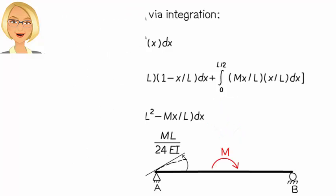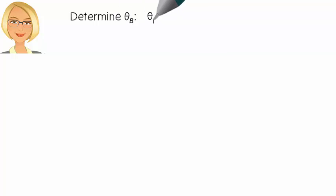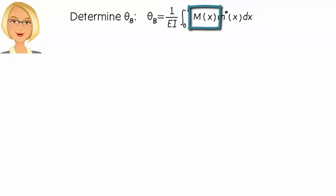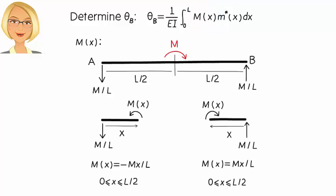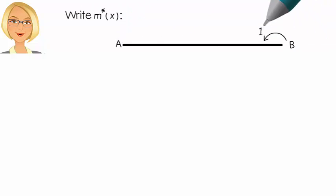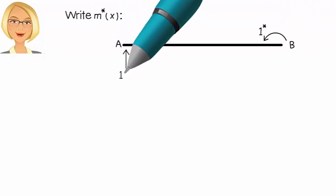Now let's calculate theta B the same way. M(x) is the same as before. To calculate M star (x), this time we place the virtual unit moment at B in the assumed direction of joint rotation like this. So we get...